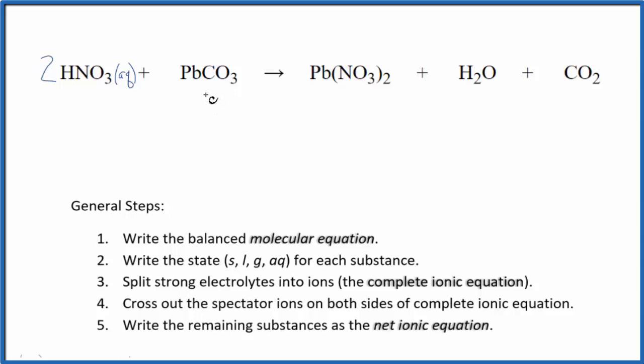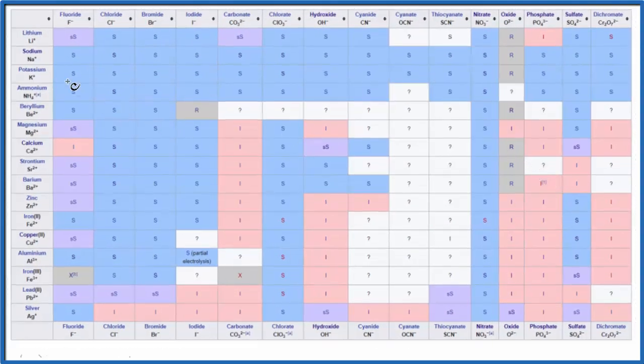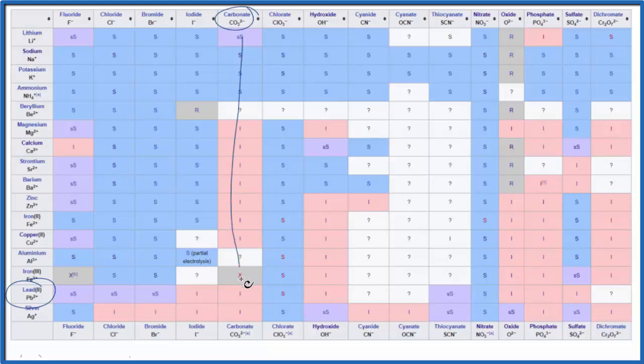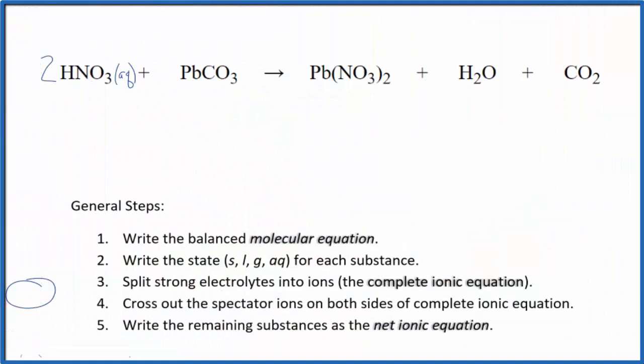Lead compounds often are insoluble. Let's take a look at that on this solubility table. We find lead right down here, and we're looking for carbonate. We go all the way down and over, and we see I for insoluble. So lead carbonate is going to be insoluble in water. We're going to write an S after that in our net ionic equation.